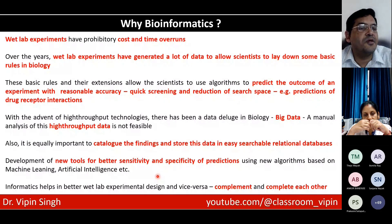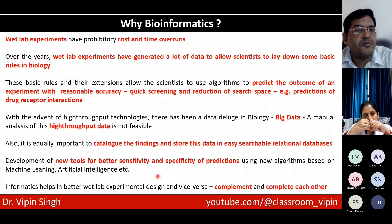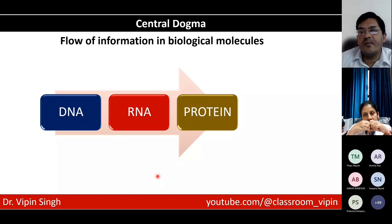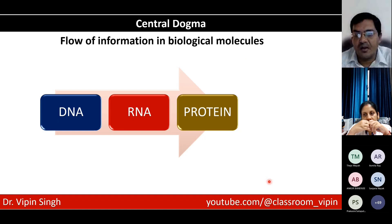Even if you're not a hardcore bioinformatician — a hardcore bioinformatician would always know how to code — for those who do wet lab also, there is a certain level of basic bioinformatics that you can always do. And that is where we will go now. So we begin with the basics first. All of you are familiar with the central dogma. It represents the flow of information in biological molecules and biological systems. You have DNA, you have RNA, you have protein, and this is the most common way of flow of information.